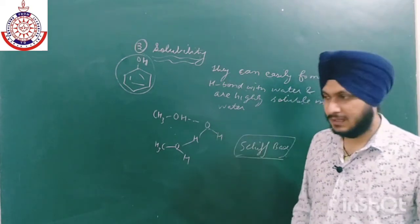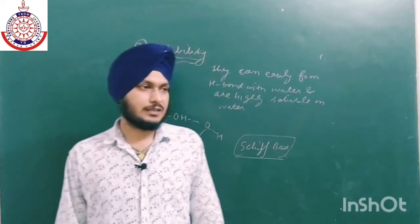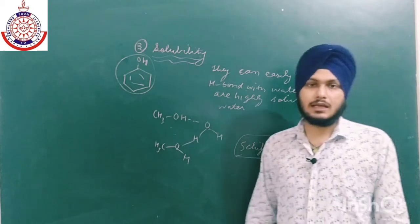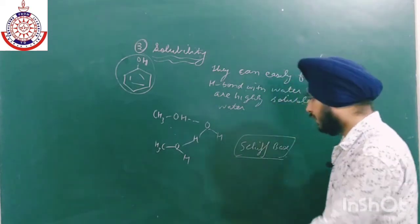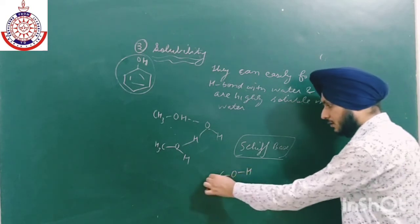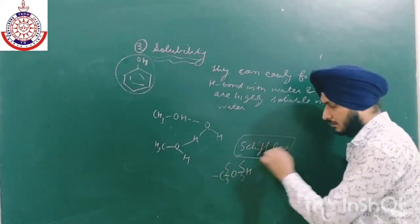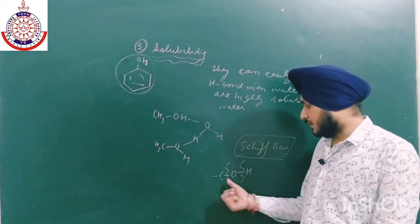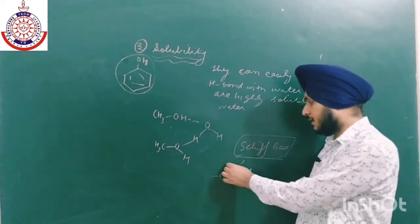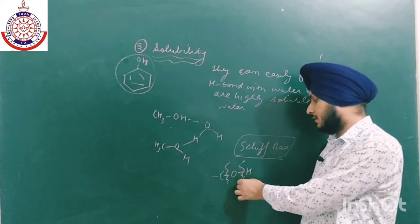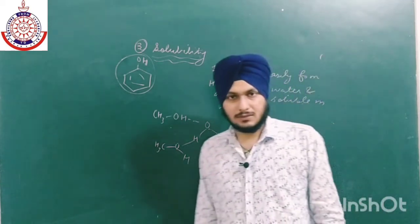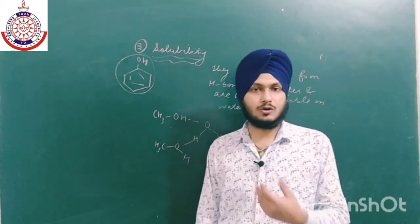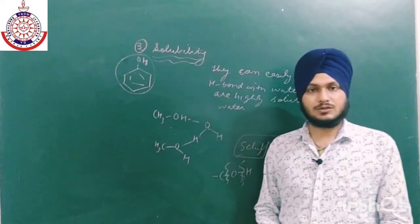This covers the physical properties of alcohols and phenols. In the next class we will discuss the chemical properties of alcohols and phenols. For alcohols, there are two types of bond cleavage possible — the O–H bond and the C–O bond — and the chemical properties are divided based on which bond cleaves. I hope you found this lecture helpful, thank you for watching.